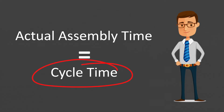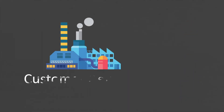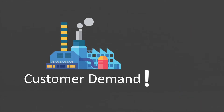On the other hand, the takt time is something you cannot necessarily see on the shop floor unless we know a bit more about the customer requests and demand. So let's see what the takt time is. The takt time is highly linked to the customer orders and can only be defined if any customer orders exist.